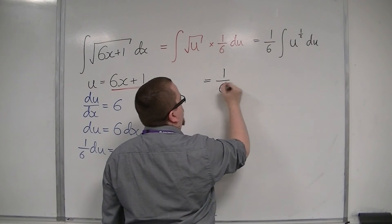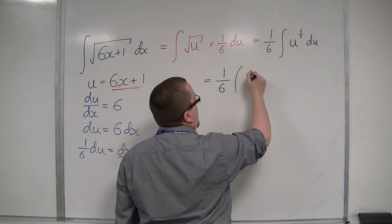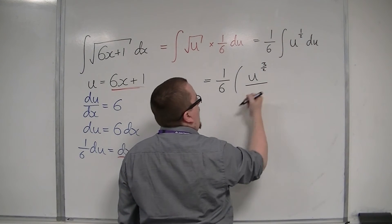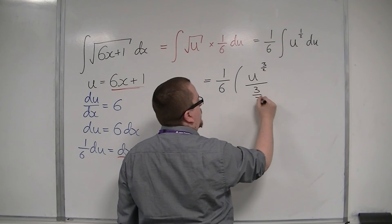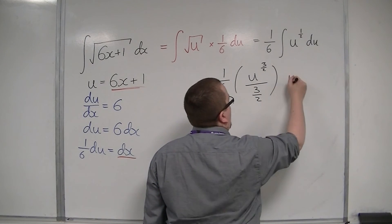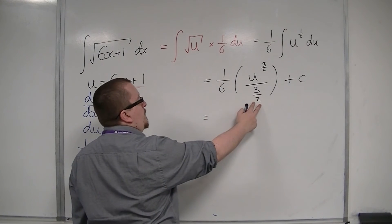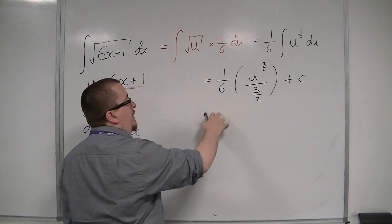So, this is 1 sixth of add 1 to the power. So, I now have u to the 3 halves. And divide by the new power plus a constant c. So, we have divided by 3 halves here, multiplied by a sixth.